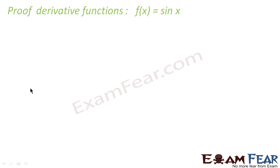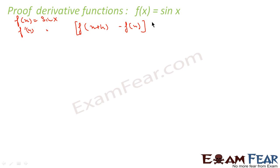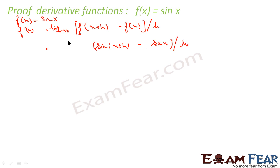Let's take the other function f(x) = sin x and find its derivative. So if f(x) = sin x, then f'(x) is by the same formula: the limit as h tends to 0 of f(x+h) minus f(x), divided by h. Here f(x+h) = sin(x+h) and f(x) = sin x, so this is limit h→0 of [sin(x+h) - sin x] / h. We can't substitute h=0 directly as it gives 0/0.